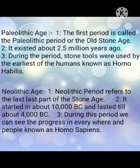Number two: Paleolithic age existed about 2.5 million years ago — 2.5 million years ago ki age ko hum Paleolithic kehte hain. Neolithic age number two: it started in about 10,000 BC and lasted till about 4,000 BC. Neolithic age 10,000 BC mein start hui aur 4,000 BC mein khatam ho gayi.